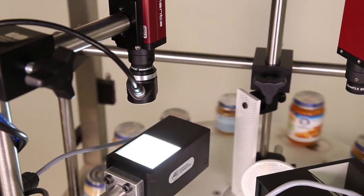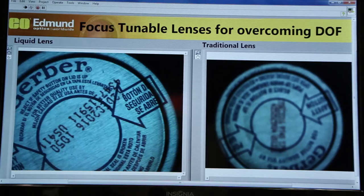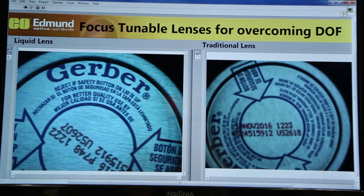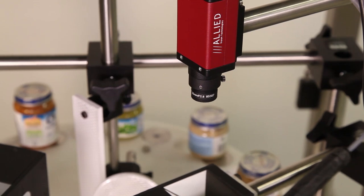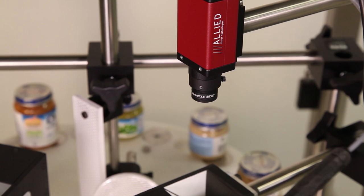And as the jars spin by and are triggered, the focus tunable lens is able to focus very quickly on each height of the jar. The system on the right, however, which does not have a liquid lens on it, is only able to focus on one plane at a time.